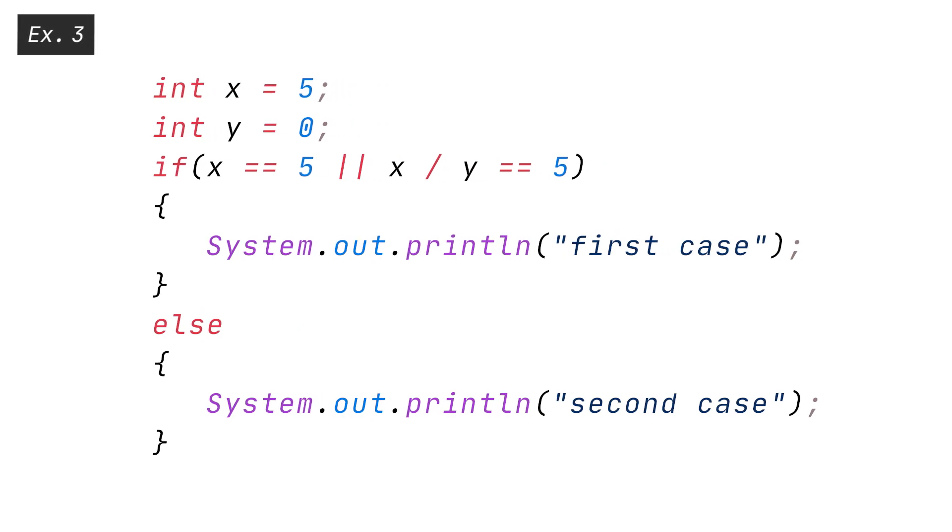X equals 5, Y equals 0, IF X equals equals 5, OR, X divided by Y equals equals 5, PRINT first case, ELSE PRINT second case.